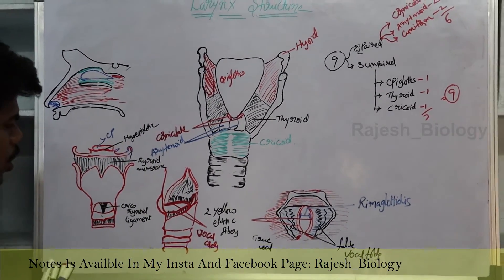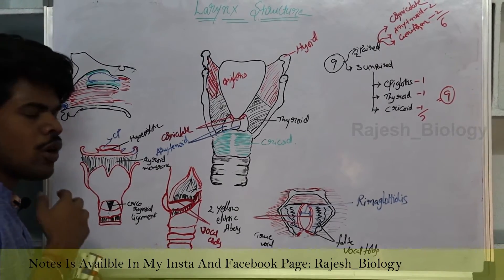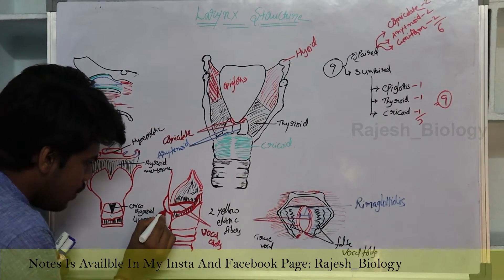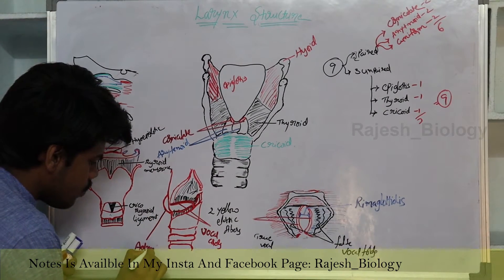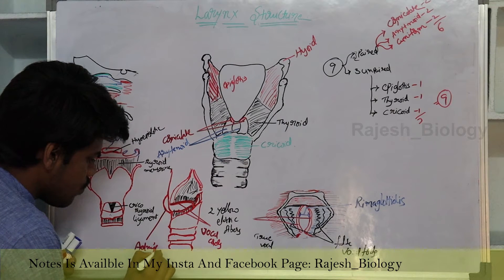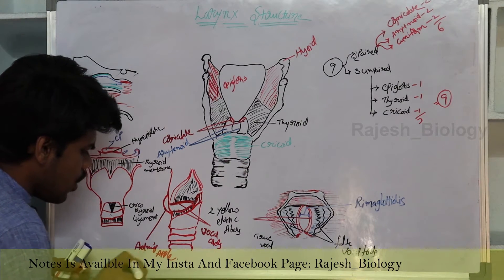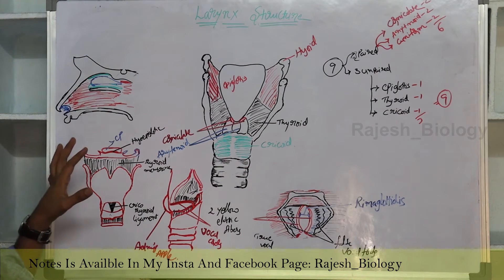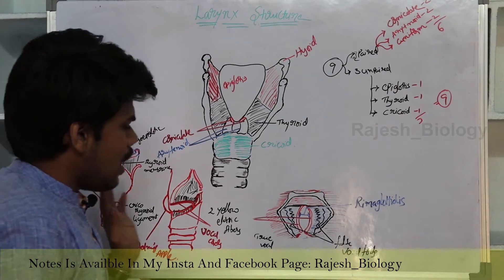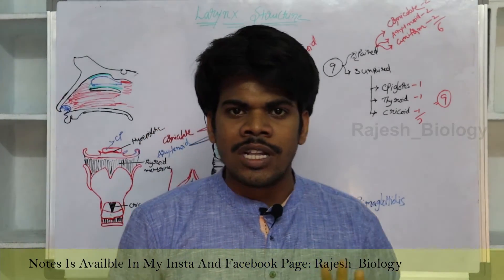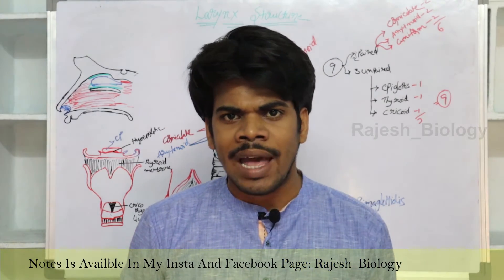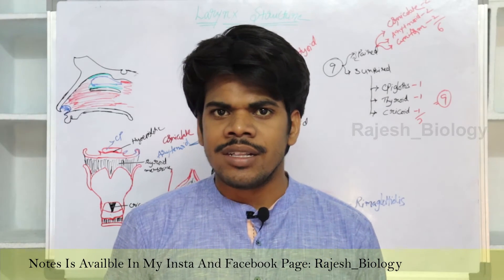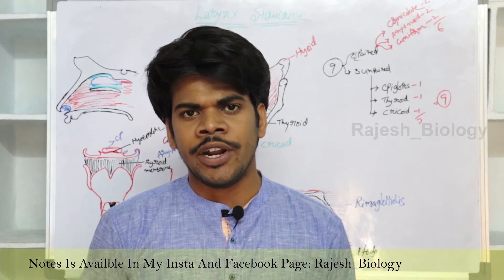The projection of the thyroid membrane is known as Adam's apple. So this is the structure of the larynx. The larynx is also known as sound box because our voice is produced from the larynx, and it is supported by nine cartilages — three paired and three unpaired.